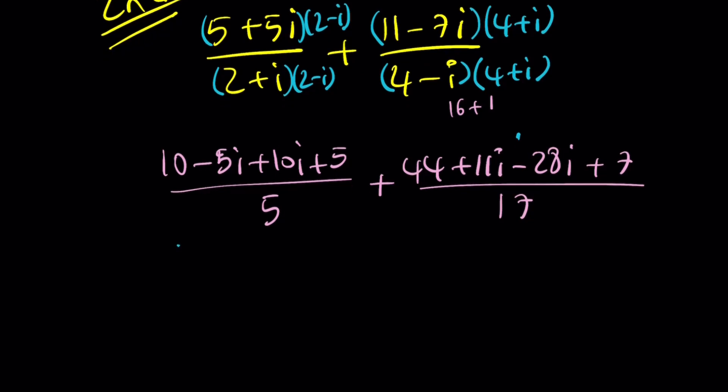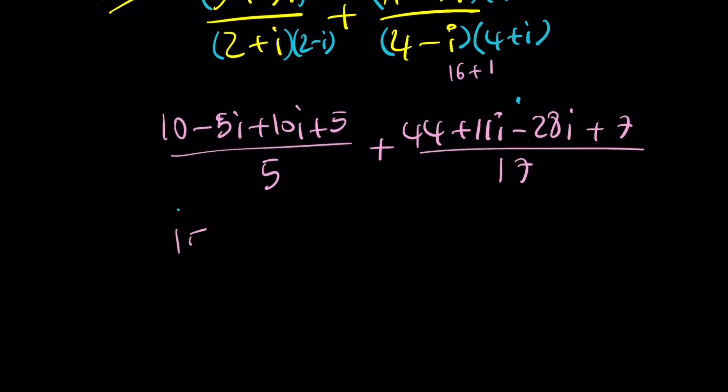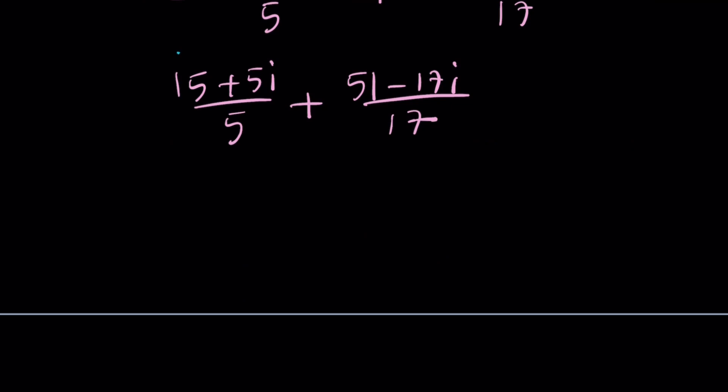Now let's go ahead and simplify the numerators. 10 plus 5 is 15 plus 5i divided by 5. And this is going to be 51 minus 17i divided by 17. How nice. Of course. Now this is going to become, if you divide by 5, you're going to get 3 plus i. And the second one is going to give you 3 minus i. That's how you come up with a nice answer, which is 6 again.